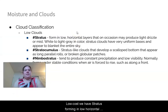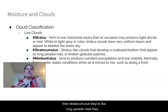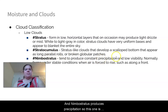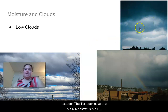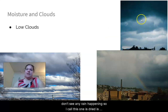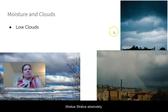Low clouds include stratus — low horizontal layers, white to light gray with a uniform base, producing light drizzle; stratocumulus — long parallel rows of broken globular patches with a scalloped bottom; and nimbostratus — like stratus but actively producing precipitation with low visibility, commonly seen along fronts. If it's raining, it's nimbostratus; if no precipitation, it's stratus.